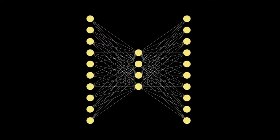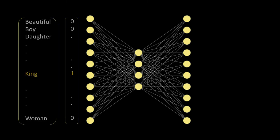We pass one word at a time and make a prediction for that single word. Since we cannot pass words as raw text, we need to convert them into one-hot representation. So we pass one word — let's say 'king' — convert it into a one-hot vector, and pass that vector as input to the model. The number of neurons in the input layer should be equal to the number of words in our vocabulary.